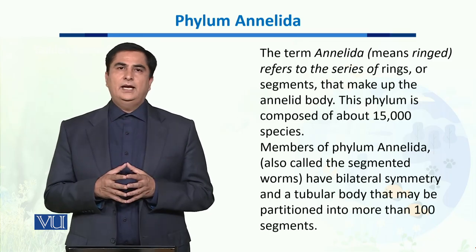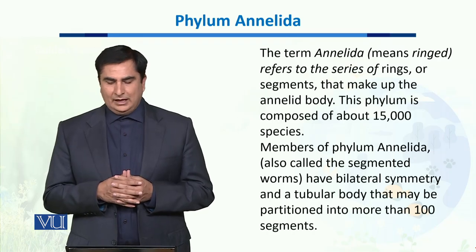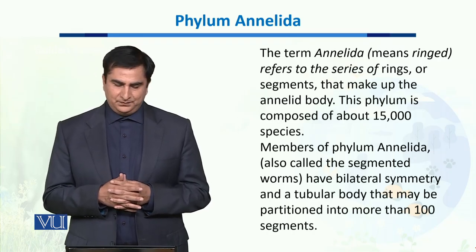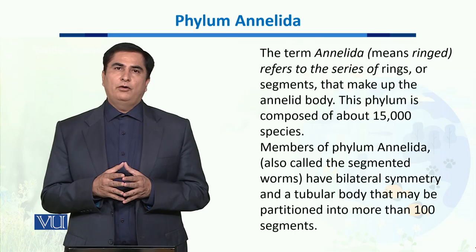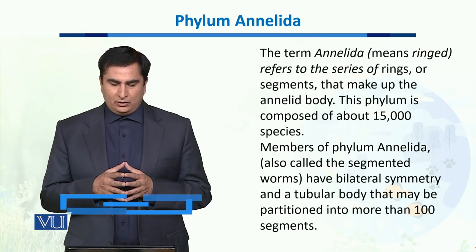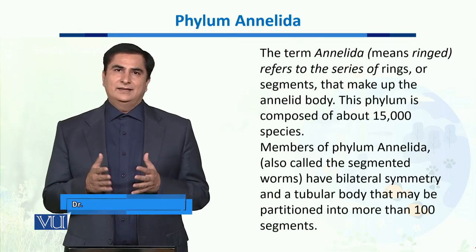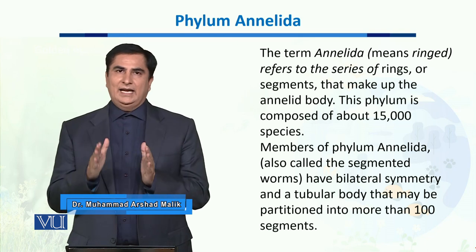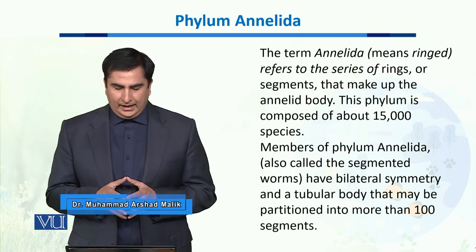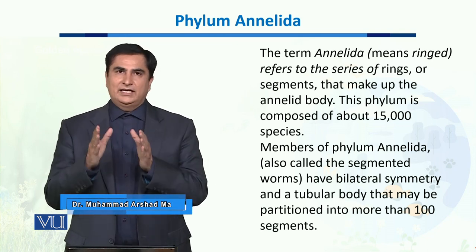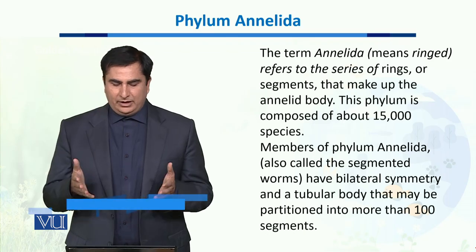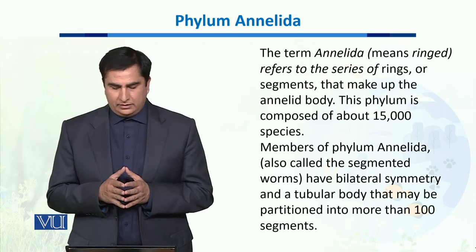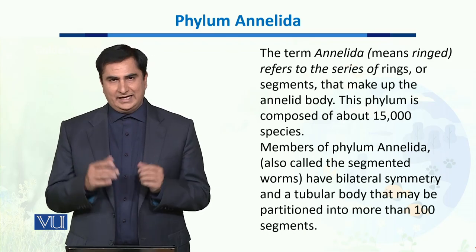This phylum is composed of about 15,000 species. Members of this phylum are also called segmented worms. They have bilateral symmetry and a tubular body that may be partitioned into more than 100 different segments.